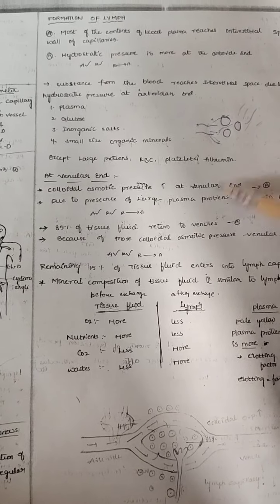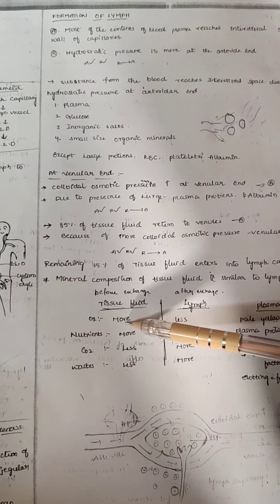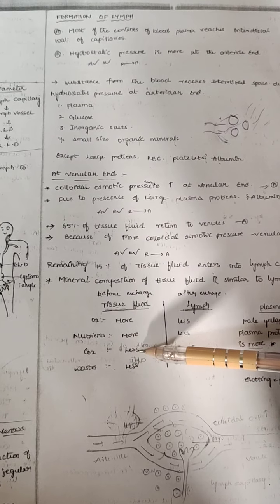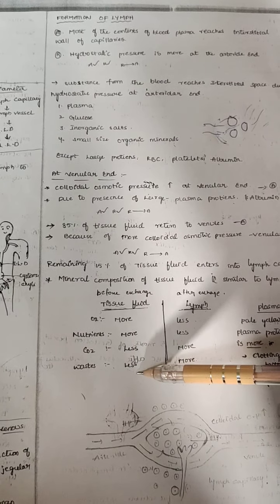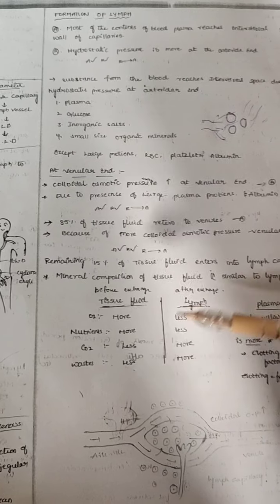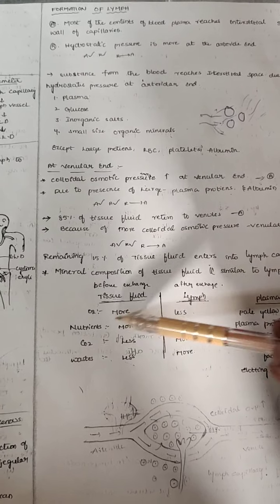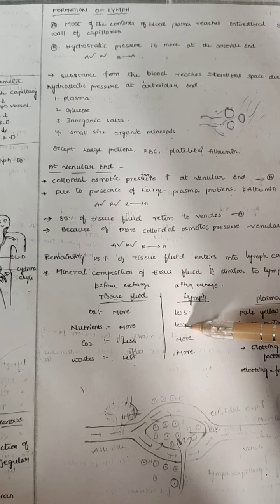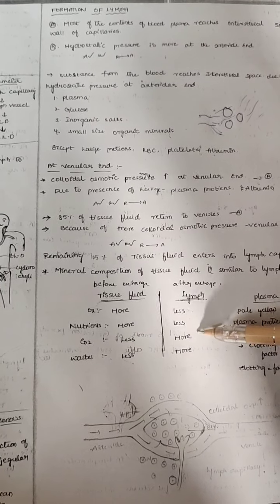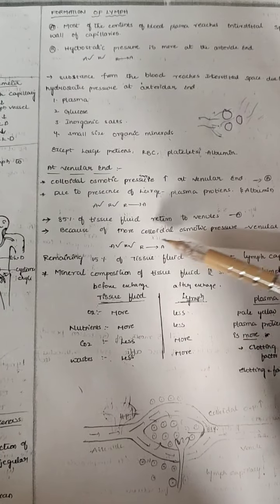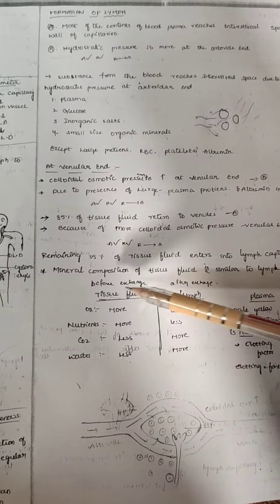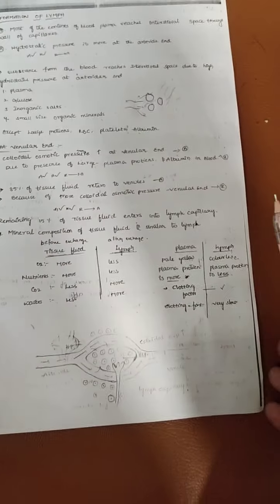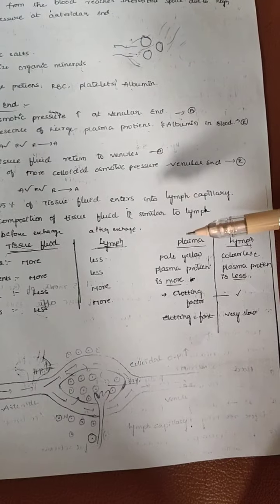Before the exchanging of tissue fluids, they cannot enter into the lymph. They have more oxygen, more nutrients, less carbon dioxide, and less waste materials. After exchange, oxygen is less, nutrients are less, carbon dioxide is more, and waste materials are more. That is the difference between tissue fluid and lymph.